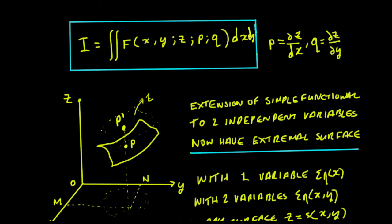In this video we're going to look at the function of this form here: I is the double integral of f of x, y, where z is a function of x and y, p is partial z by partial x, and q is partial z by partial y, all by dx dy.